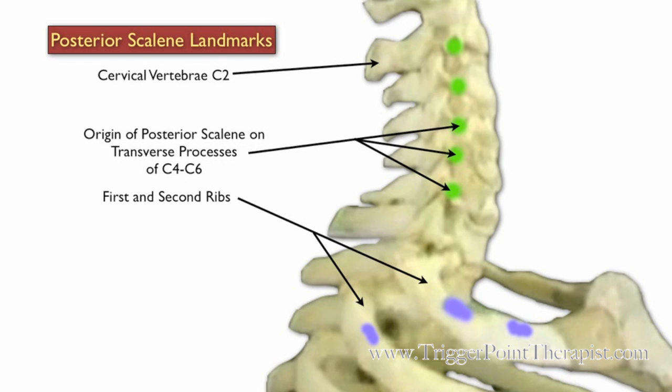Now we have the posterior scalene landmarks. Again the cervical vertebrae at C2 and the first and second ribs. The posterior scalene originates on the transverse processes of C4 through C6, and inserts on the second rib.